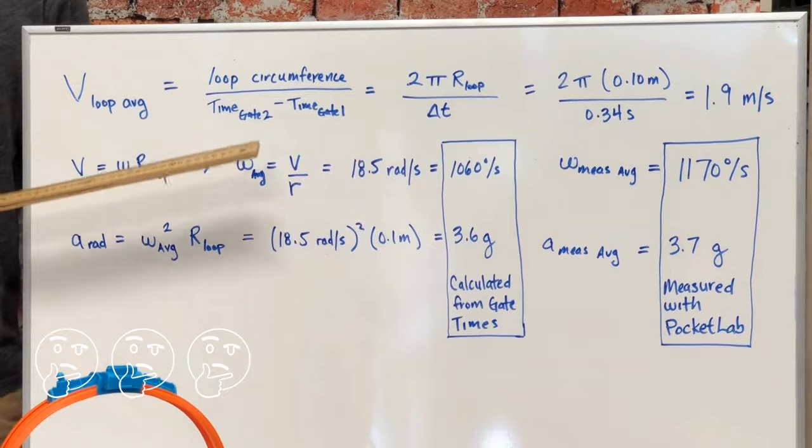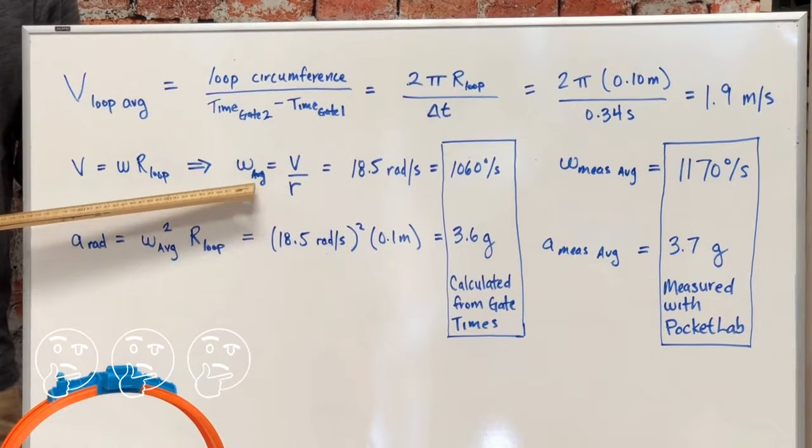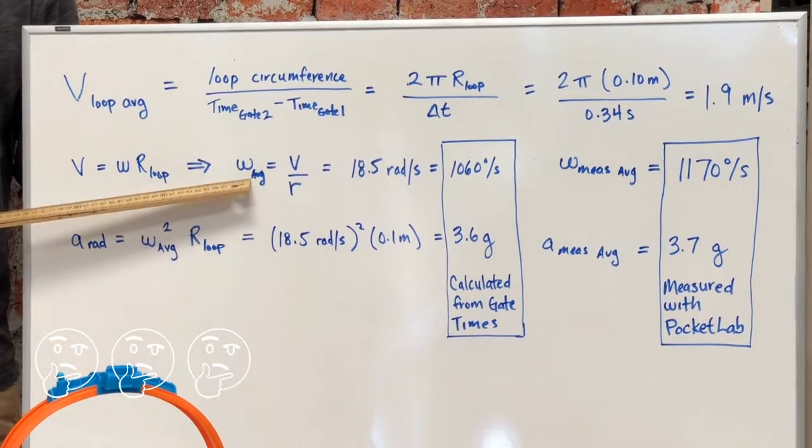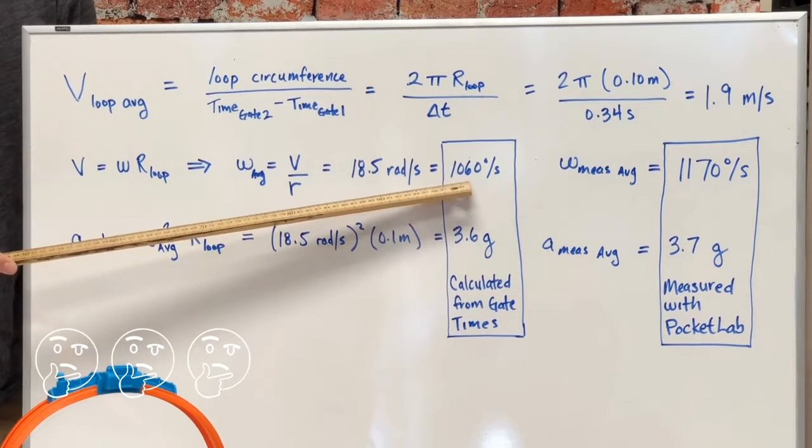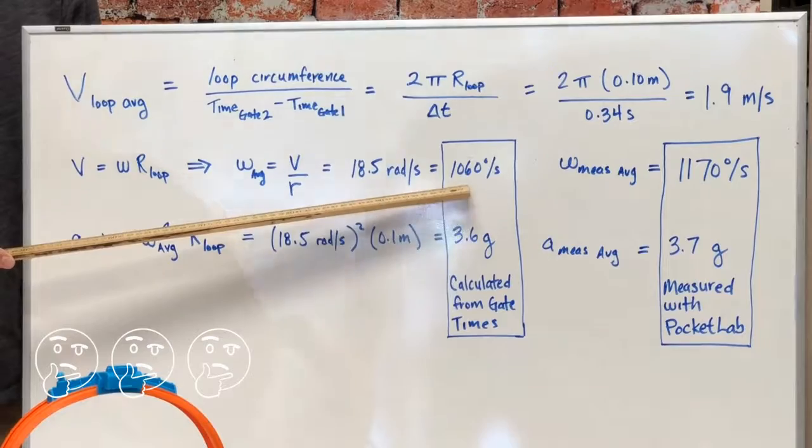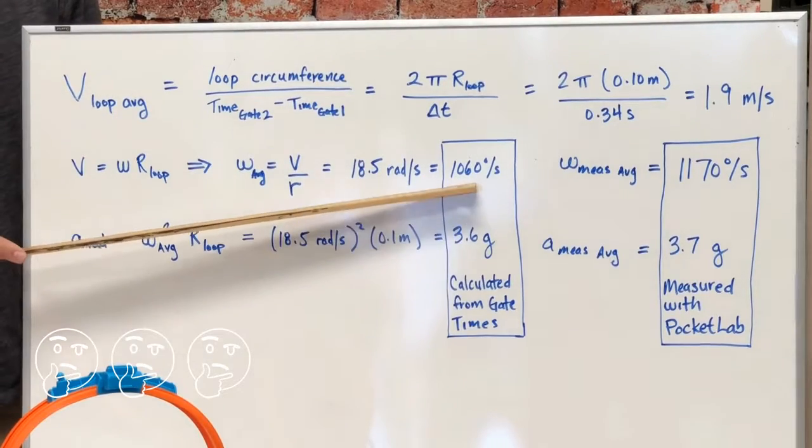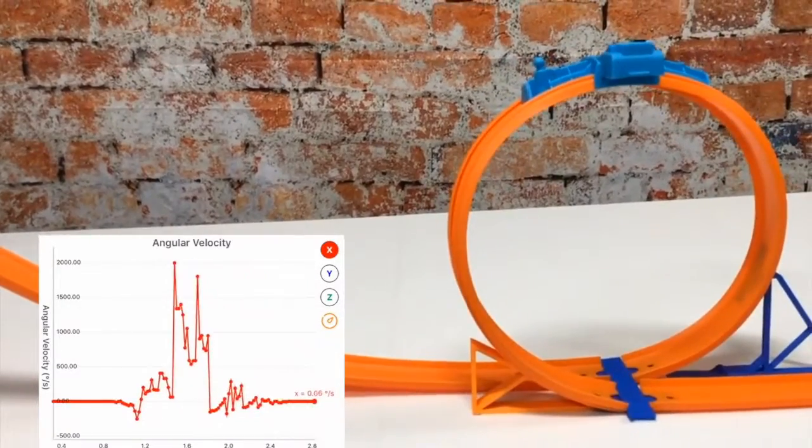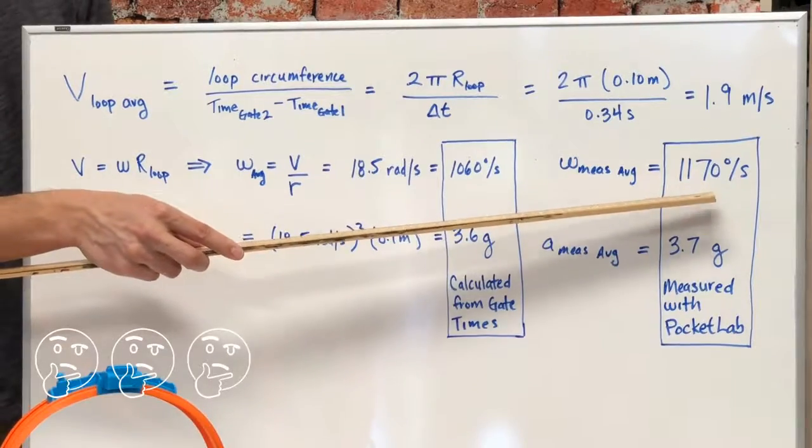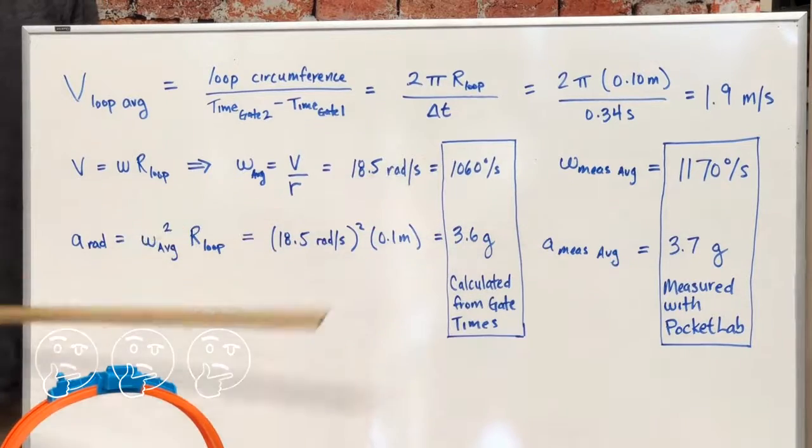Plugging in the geometry and our time, we get 1.9 meters per second as our average velocity. Now, using that average velocity, we can also calculate an average angular velocity of 18.5 radians per second, or about 1,060 degrees per second. When we compare this to the measurement from our gyroscope, we measured an average angular velocity of 1,170 degrees per second. It's a pretty good agreement.